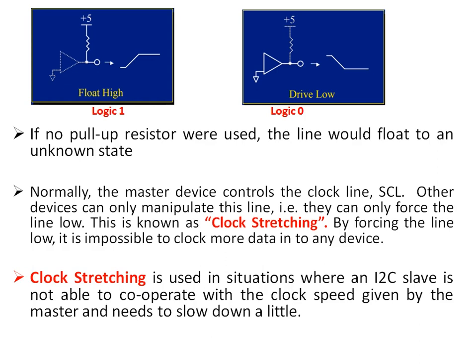One important feature to know is clock stretching. Normally the master device controls the clock line SCL, but other devices — that is slaves — can only manipulate this line by forcing it low. This is known as clock stretching. By forcing the line low, it is impossible to clock more data onto the bus. Clock stretching is used in situations where an I2C slave is not able to cooperate with the clock speed given by the master.